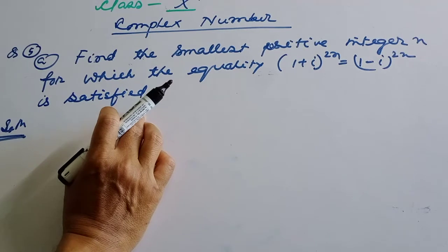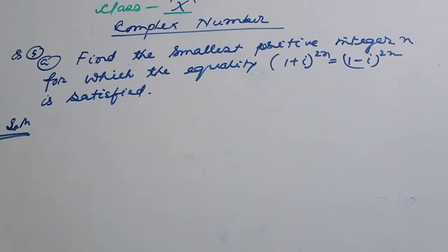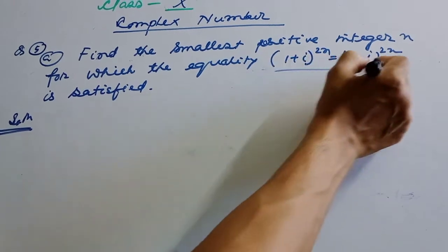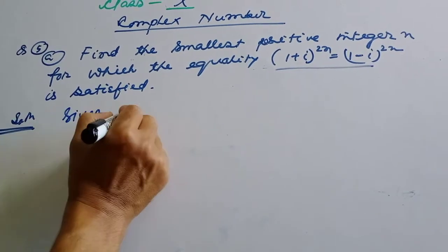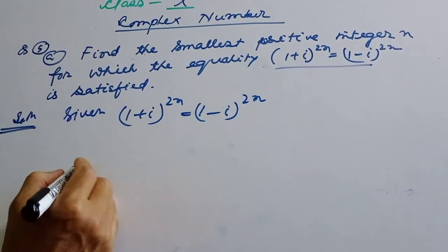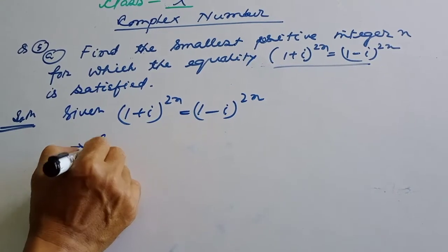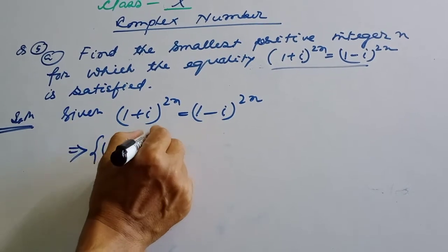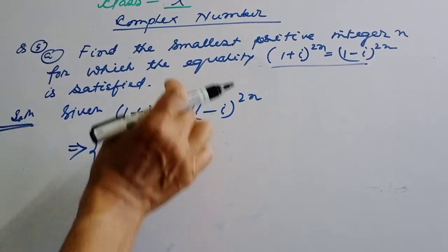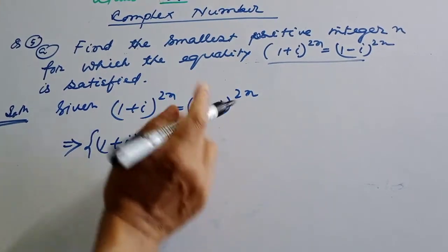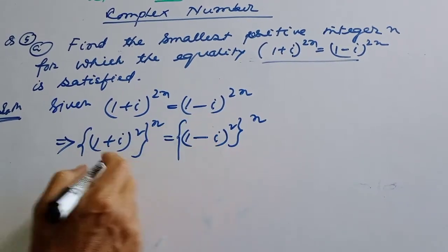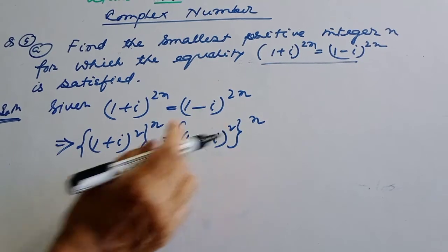I am finding the value of positive integer n. I will take (1 + i) whole squared to the power n equal to (1 - i) whole squared to the power n. I am canceling the power 2n, then using the a plus b whole square and a minus b whole square identities.